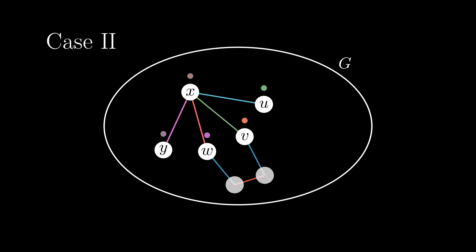The second is that the path doesn't end in w. This is even better since x and w now have the same color and we again reduce the problem to case 1.